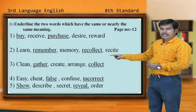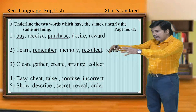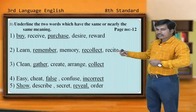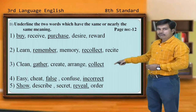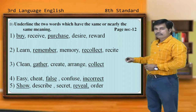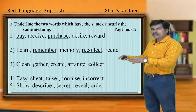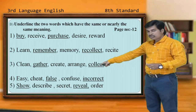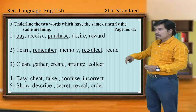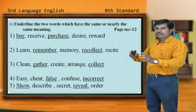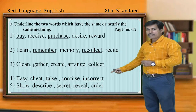The third one: clean, gather, create, arrange, collect — 'gather' and 'collect' have a similar meaning. The fourth one: easy, cheat, false, confuse, incorrect — 'false' and 'incorrect' both are having a similar meaning. The fifth one: show, describe, reveal, order — 'show' and 'reveal' are the two words having a similar meaning. Hope you got the answers for all five questions.